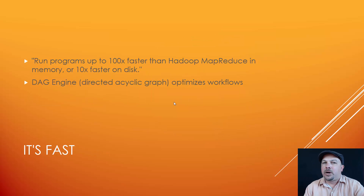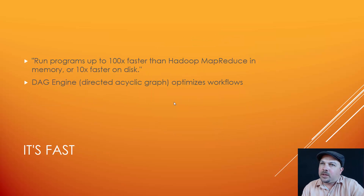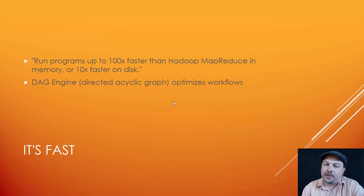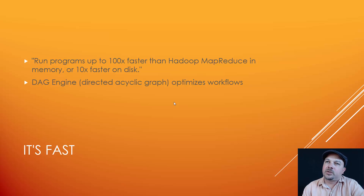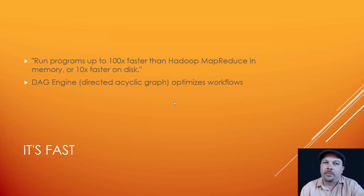Why use Spark as opposed to something else? A lot of people compare it to Hadoop MapReduce, which was kind of the first technology that came out for doing distributed processing of data on a cluster. Spark claims to run up to 100 times faster than MapReduce if you're running in memory, or 10x faster on disk.